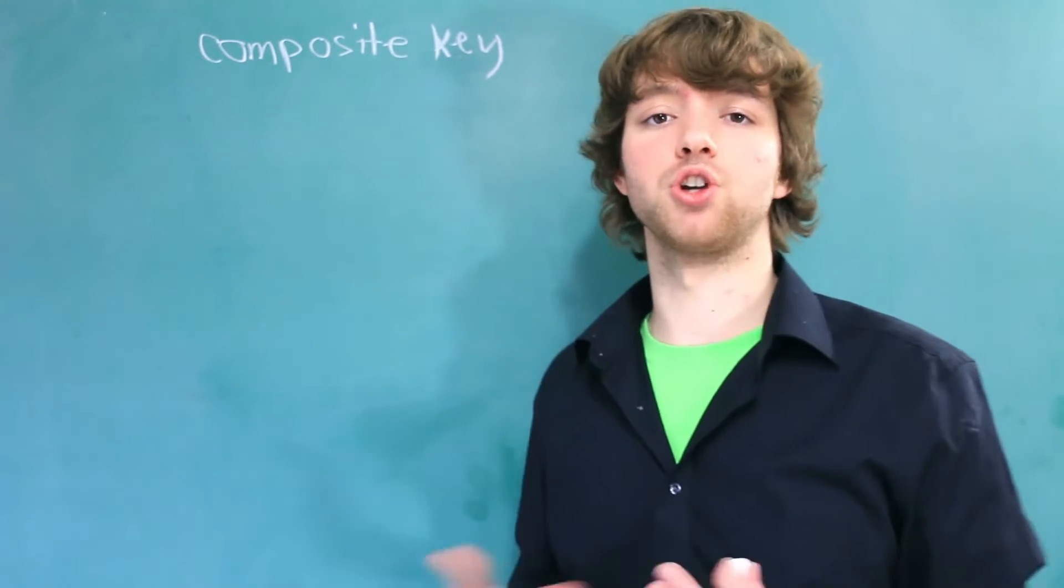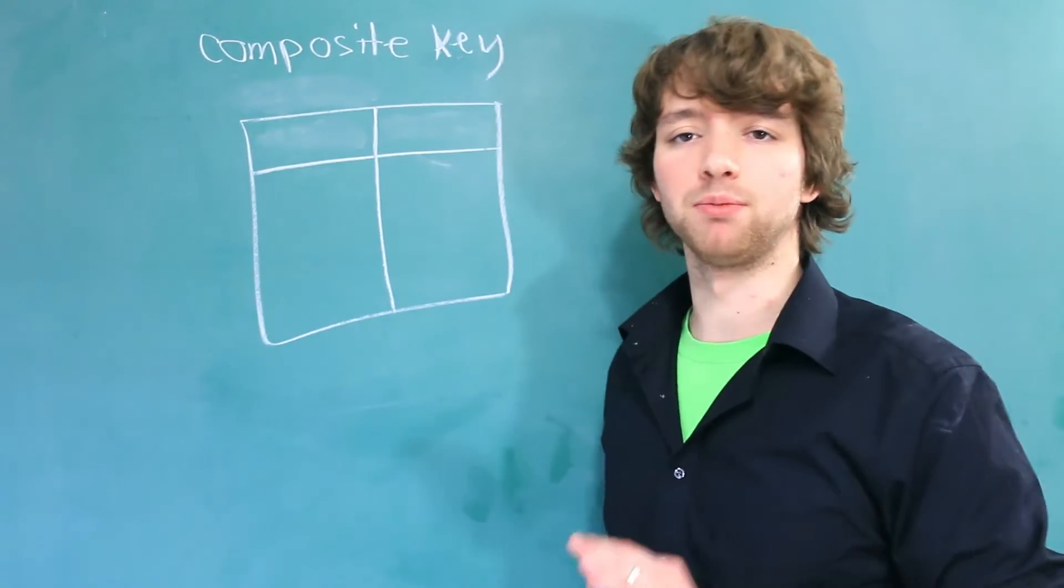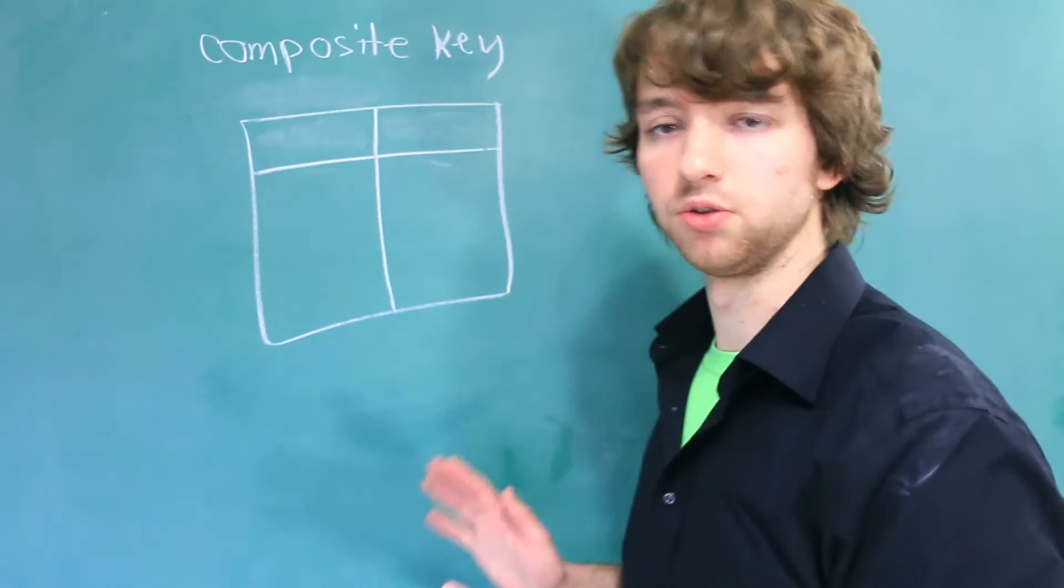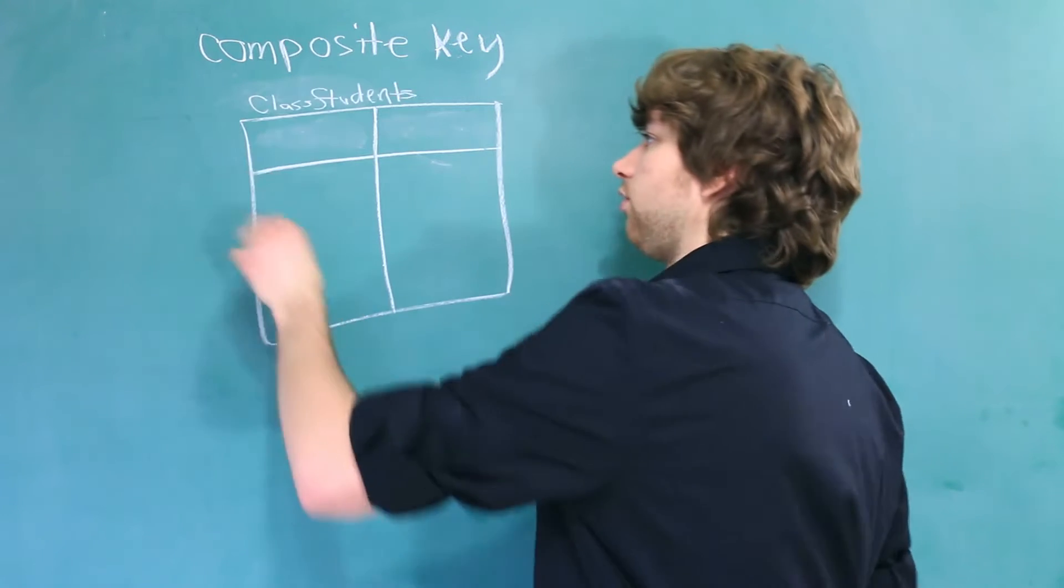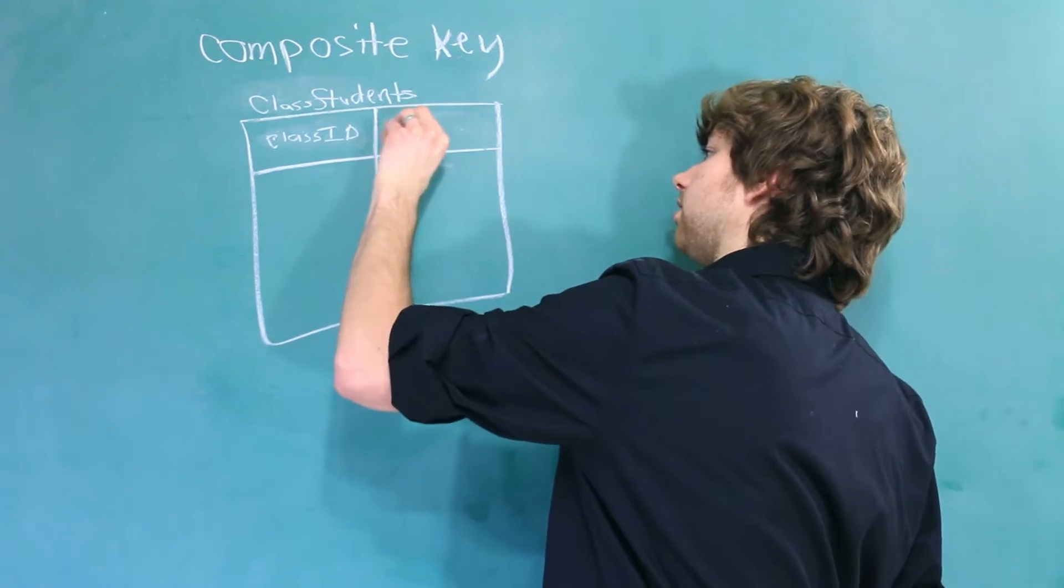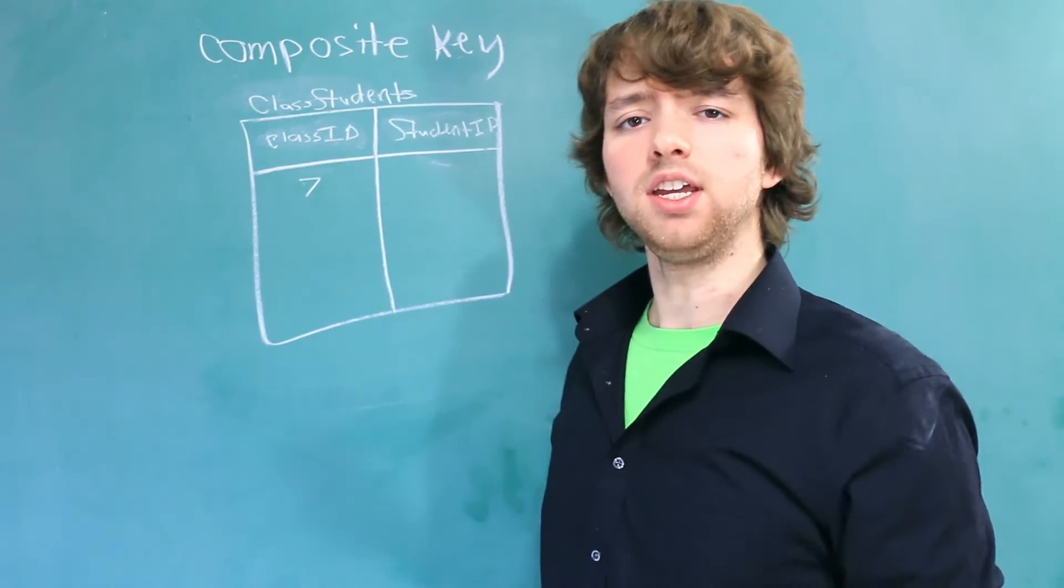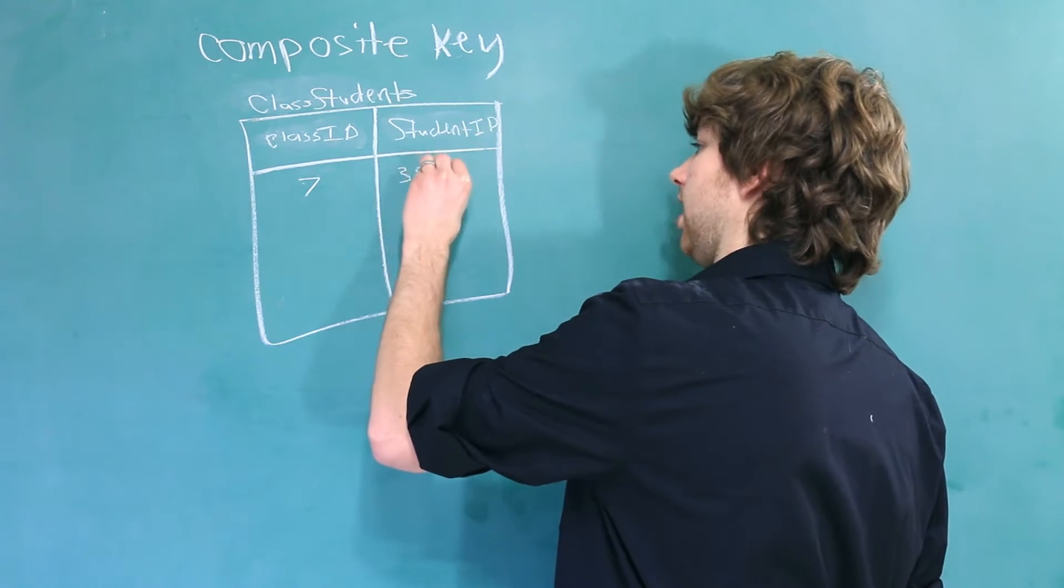Let's go through a little example that shows this in action. We have a table. So we'll go with the bare minimum number of columns just to keep it simple, but you could have much more data in here if you really wanted to. But to start off, we'll name this class students. And over here we'll have the class ID and the student ID. Now for a specific class, let's say the class with the ID of 7, it has the student with the ID of 3084.